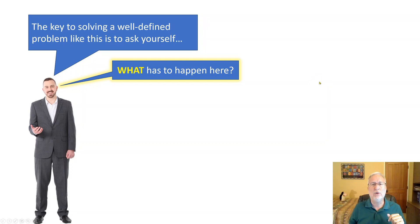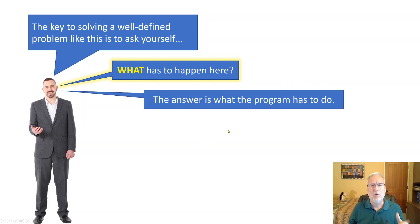How can you code something that you don't know what is supposed to happen? So what does the program have to do? You can think at a high level: has to do input, processing, and output. What's the input? We need to get three items, three values from the user.